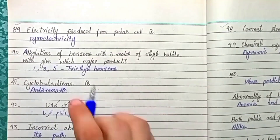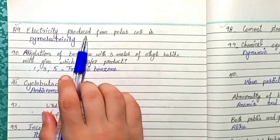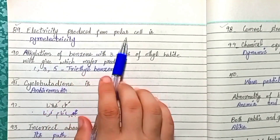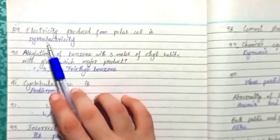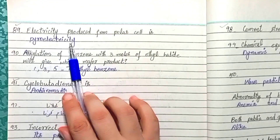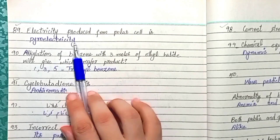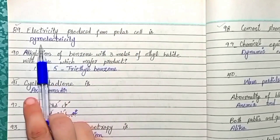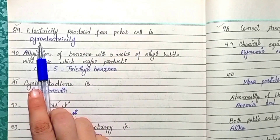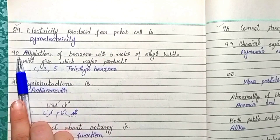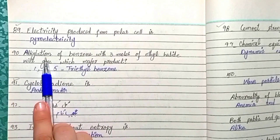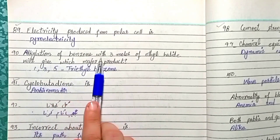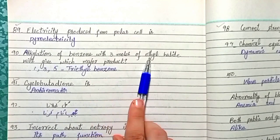Question 89: Electricity produced from a polar cell is called pyroelectricity.